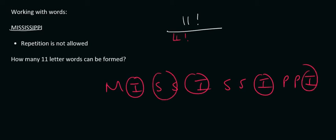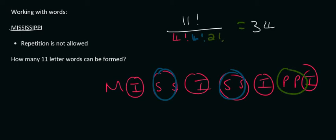Then there are four S's, so that'll be, so that should have been in a different color, so that's four S's, that's four factorial. And then there are two P's, and so that'll be two factorial. And if you go put that on the calculator, you should get an answer of 34,650.